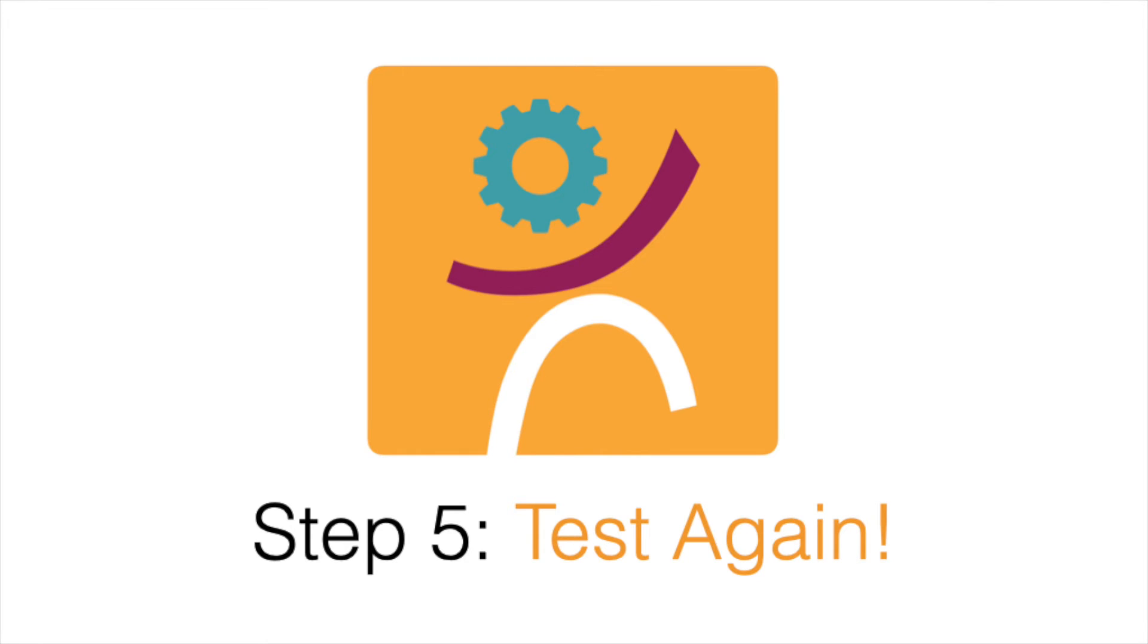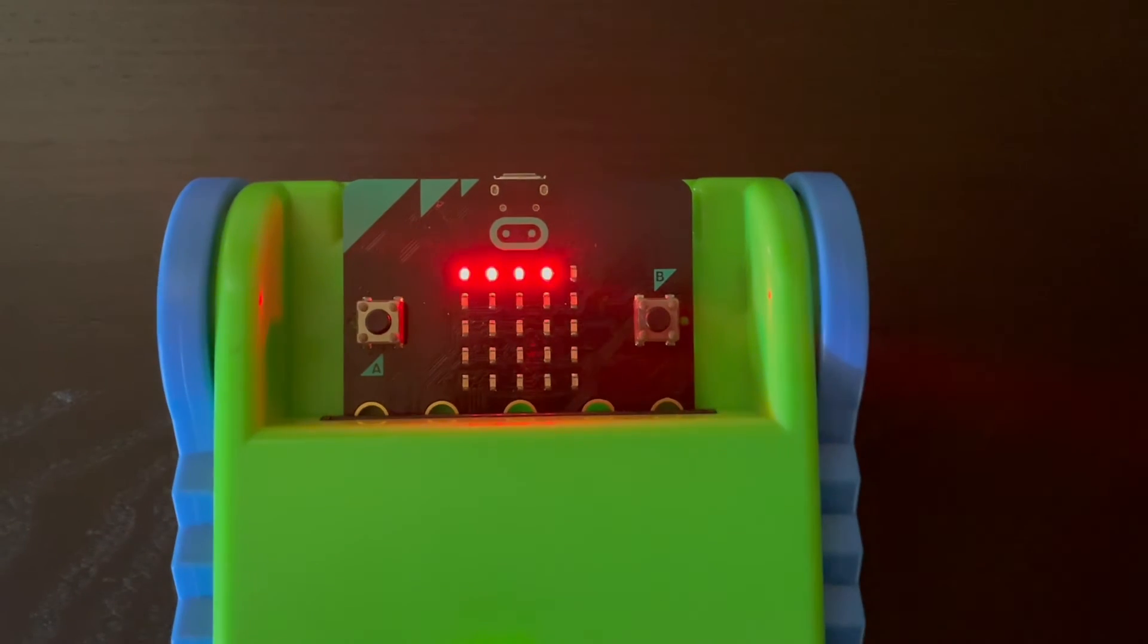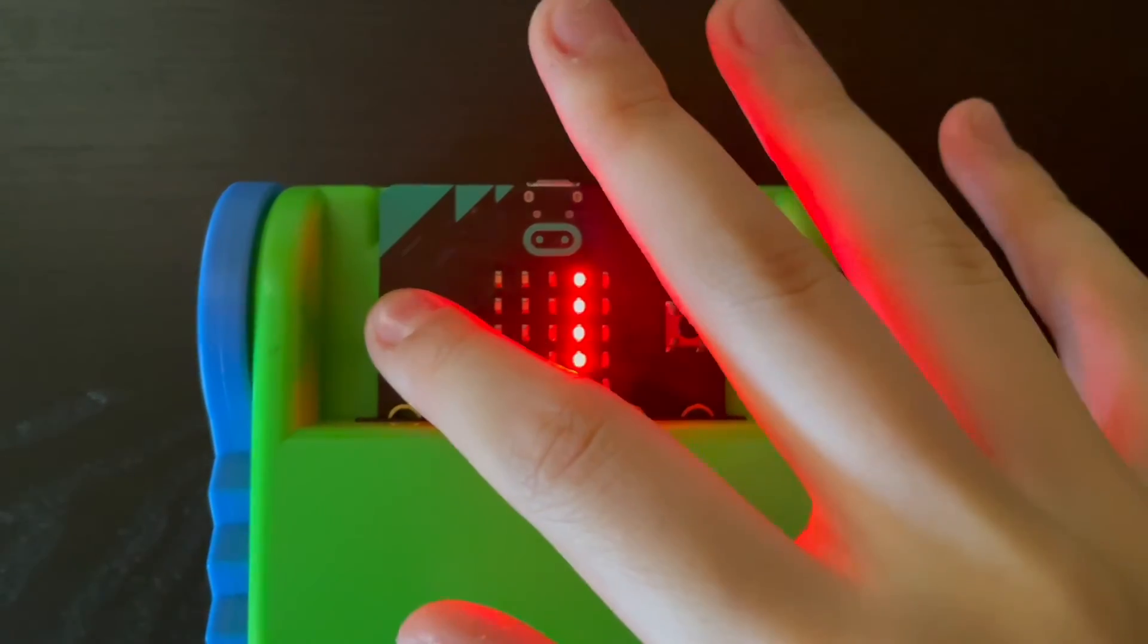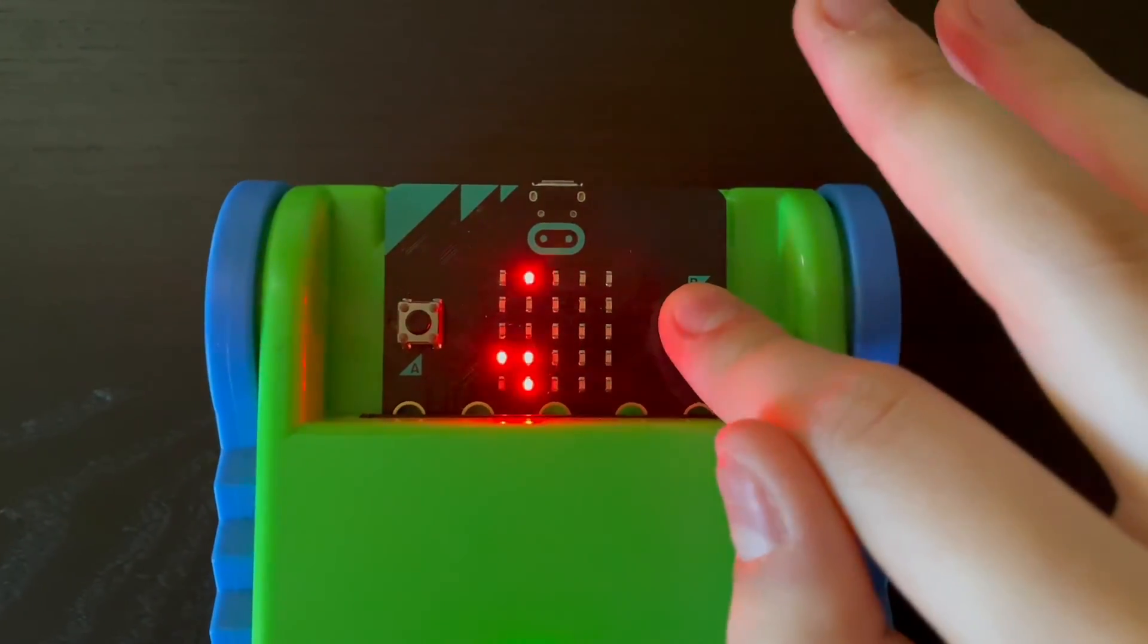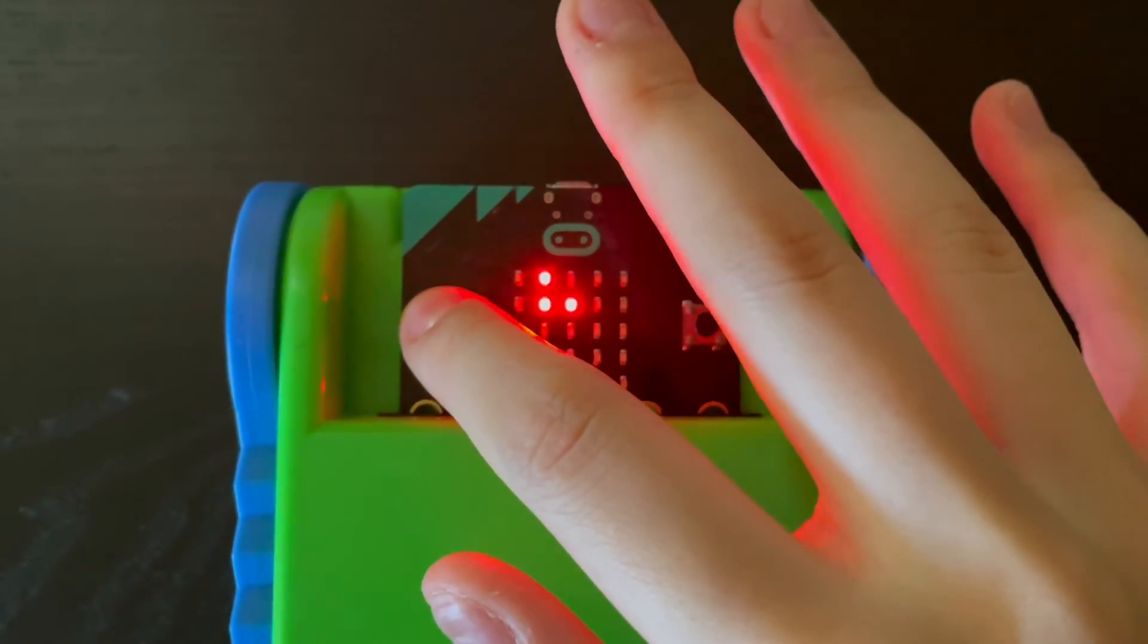Step 5: Test again. With your new code, run the same tests as you did in Step 3 and evaluate. What happened to your program? Are the changes you see the ones that you expected?